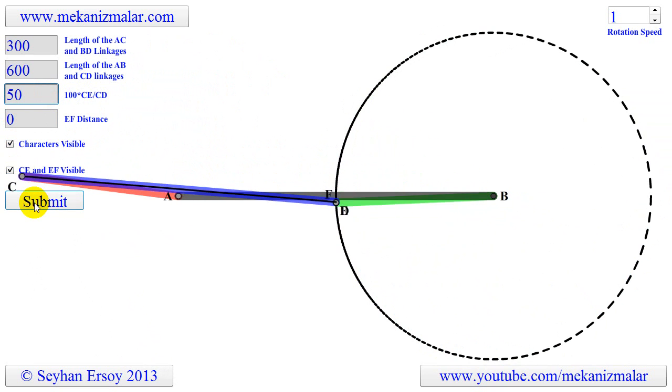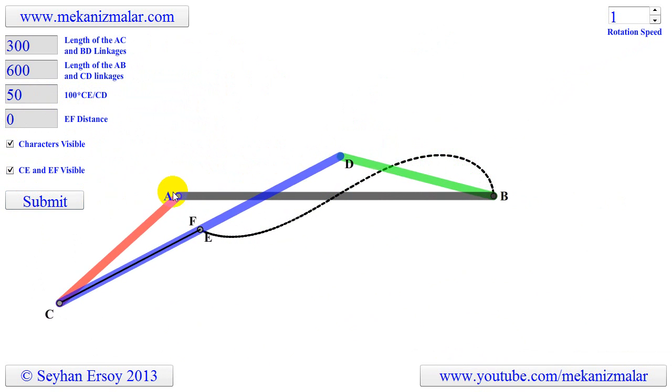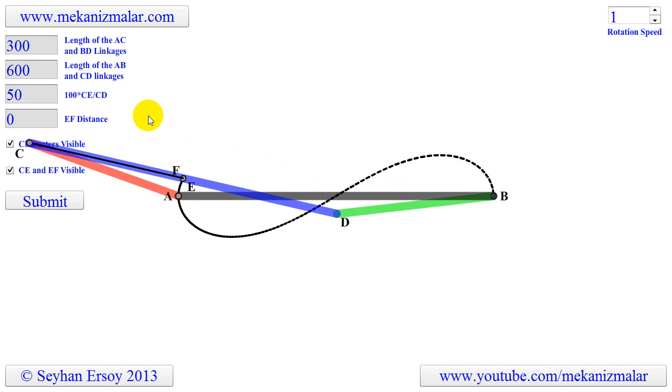Now let's change again to the initial configuration. Since AC is the half of CD, the curve is passing through A and B points.